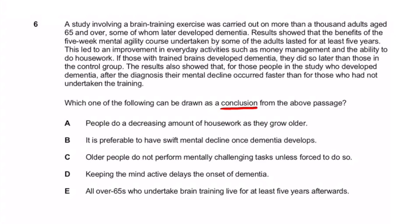The passage reads: 'A study involving a brain training exercise was carried out on more than a thousand adults aged 65 and over, some of whom later developed dementia.' That's clearly a fact — it's just describing the experiment setup. The next sentence says 'results show that the benefits of the five-week mental agility course undertaken by some of the adults lasted for at least five years.' Results are fact — you can't make up results — so we cross this out too.